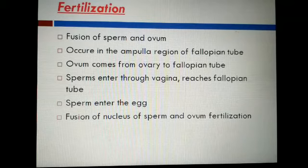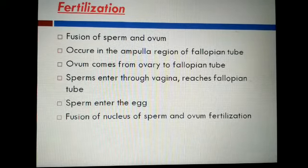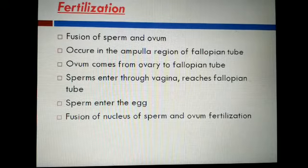Insemination is the discharge of semen by the penis into the female vagina close to the cervix during coitus. Always remember that fertilization can only occur if the ovum and sperm are transported simultaneously to the ampulla region. This is the reason that not all copulations lead to fertilization and pregnancy.